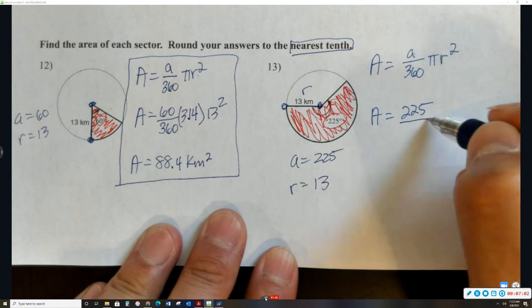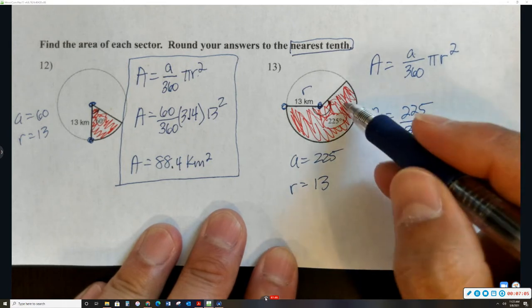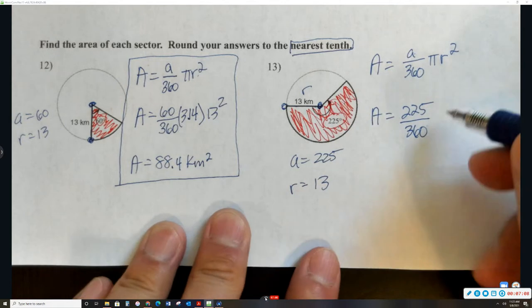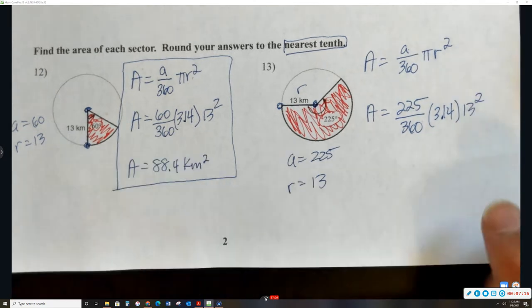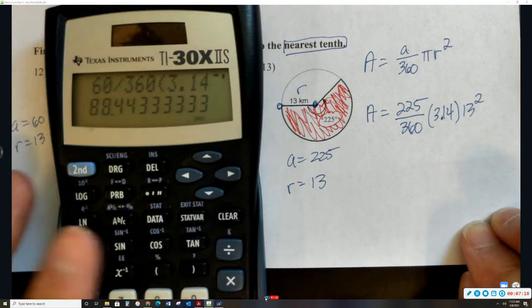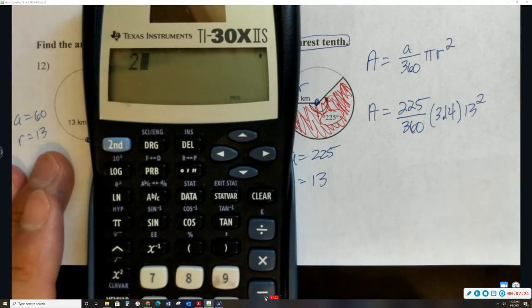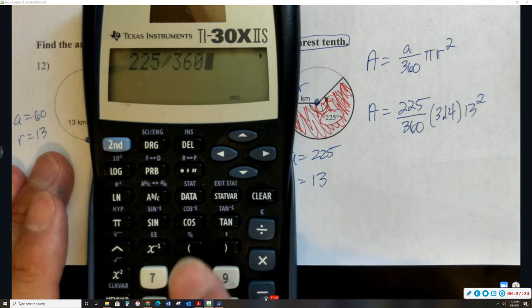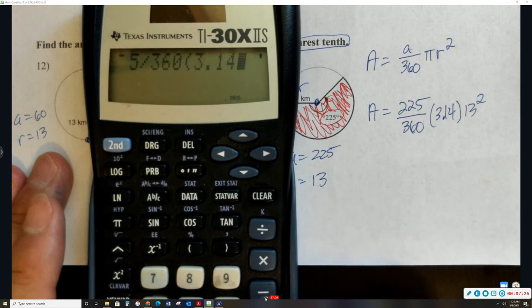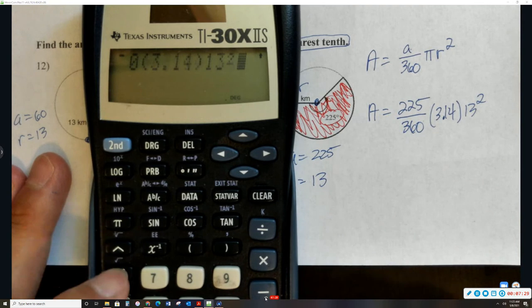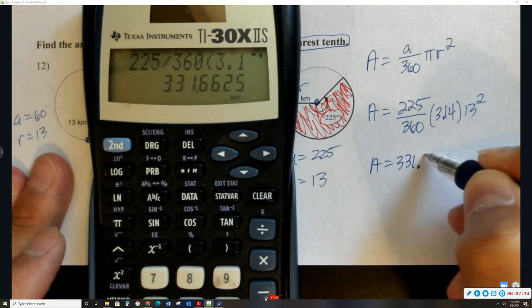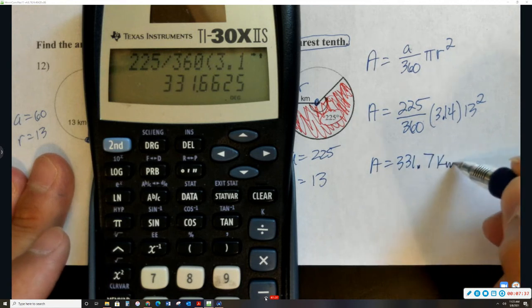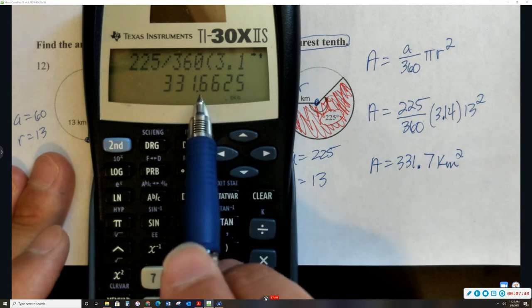Substitute that information into the formula. The angle of the sector is 225, or we're only finding 225 out of the 360 degrees area. Pi is 3.14, and then the radius is 13. Substitute, or plug that into the calculator. So here, 225 divided by 360, instead of pi we're going to use 3.14, and then 13 squared. And the area is 331.7. That rounds up to .7, that 6 bumps that 6 up.